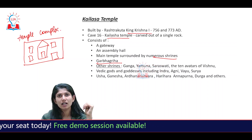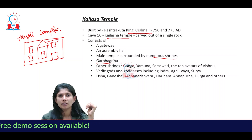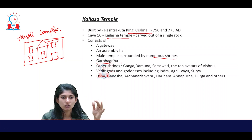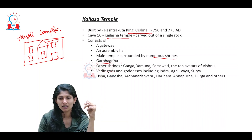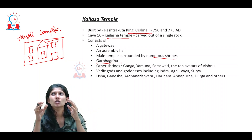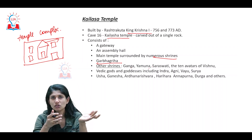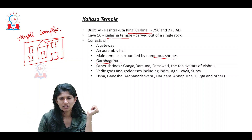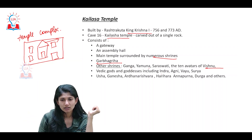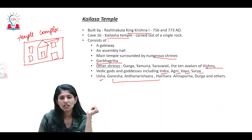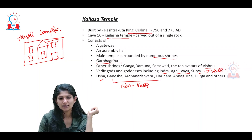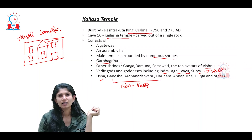You see the Garbhagriha and on top of that a pyramid-like structure. The other shrines in the temple complex house gods such as Ganga, Yamuna, and Saraswati. Looking at this, you see both Vedic age deities and non-Vedic age deities — Vedic gods like Indra, Agni, Vayu, Surya, and Usha, and also non-Vedic deities such as Ganesha, Harihara, Purna, and Durga.